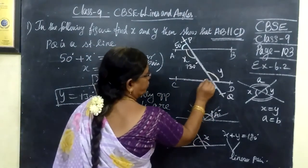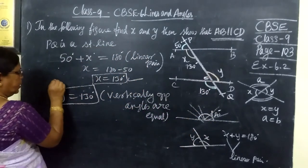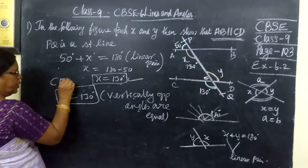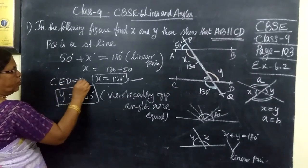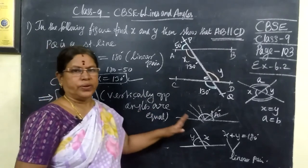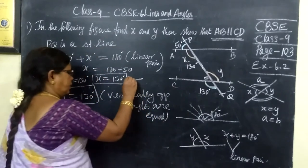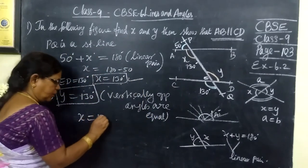You give some name, some E, CED. Angle E equal to 130, which implies Y equal to 130 since vertically opposite angles. So X also 130 degree, Y also 130 degree.